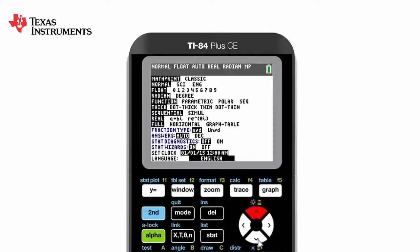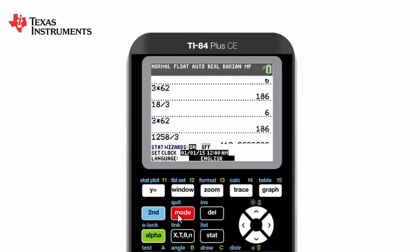No matter what screen we're on on the graphics calculator to return to the home screen, we need to quit. To do this, we simply press second and then the mode button, which will return us to the home screen every single time.